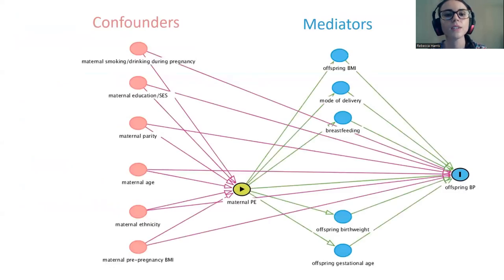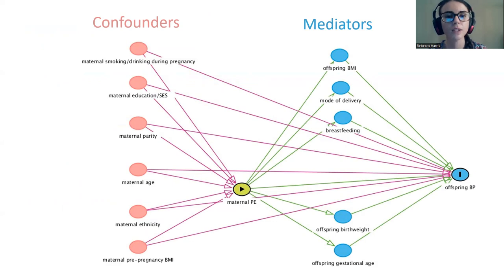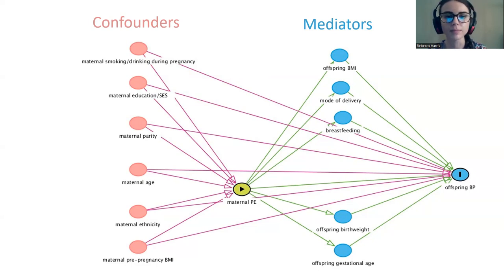When looking at observational evidence, it's very important to account for confounders which affect the relationship between the exposure and the outcome. This graph shows the confounders and mediators of interest. The main confounders of interest were maternal smoking and drinking during pregnancy, education or socioeconomic status, maternal parity, age, ethnicity, and pre-pregnancy BMI.